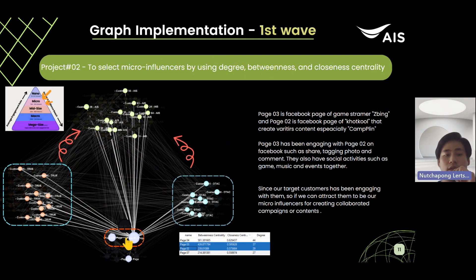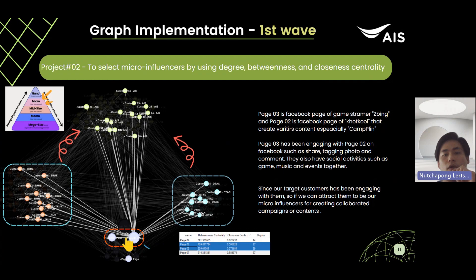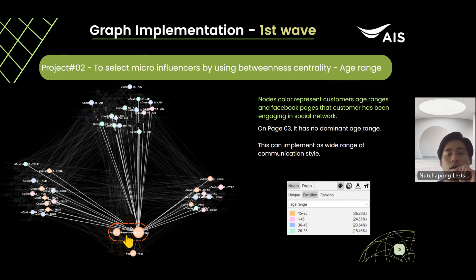For the second strategy, we will use two micro-influencers, pages two and three, with lower budgets to bring customers from True and DTAC to AIS. Benefits for calling up influencers: first, more exciting content and events; second, explain more value of the industry; third, build more stickiness of customers. On page three, there is no dominant edge range appearing on this graph, so it can be implemented with a wide edge range of communication style. We can use other node attributes to build more personalized communication, like gender or most activity.